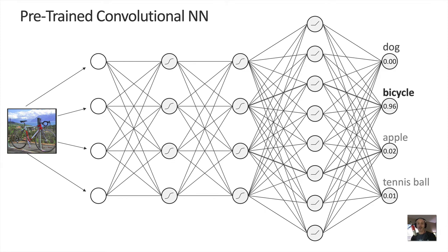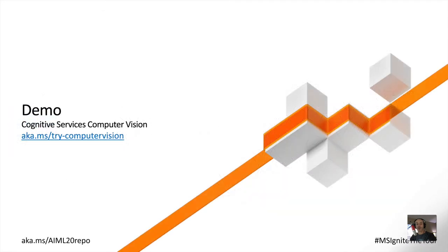You can use a model with predetermined weights, and as long as you only need to detect the object classifications the model was trained for, you're all set — just provide your image and use the classifications the pre-trained model generates. Some models can also detect the location of objects within images or analyze the image in other ways. Let's try the pre-trained cognitive services computer vision — there's a simple web-based UI you can use at aka.ms/try-computer-vision, and I'll also show you how to access the API programmatically.